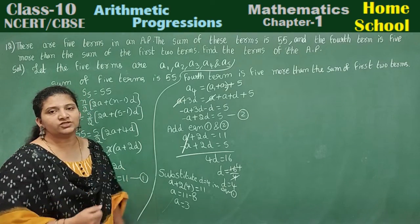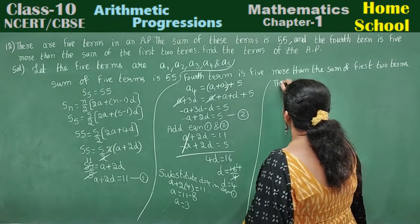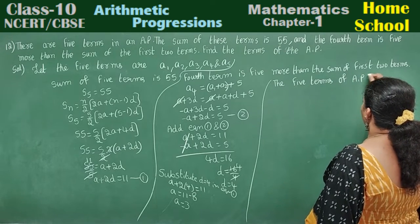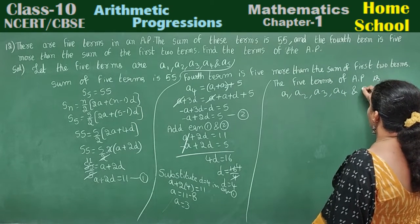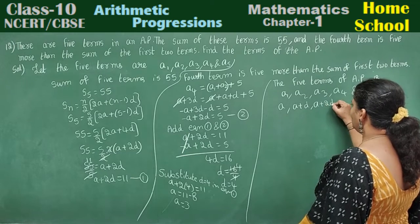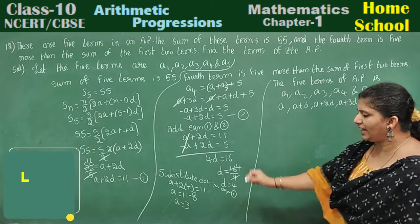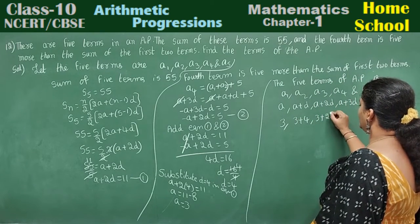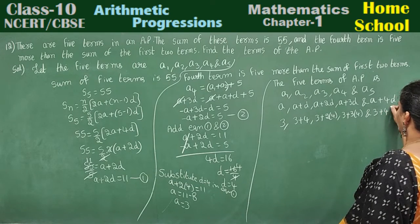What do we need to calculate? Find the terms of the arithmetic progression. We have taken five terms: A1, A2, A3, A4, and A5. In general form: A, A plus D, A plus 2D, A plus 3D, and A plus 4D. Now substitute A equals 3 and D equals 4: we get 3, then 3 plus 1 times 4, 3 plus 2 times 4, 3 plus 3 times 4, and 3 plus 4 times 4.